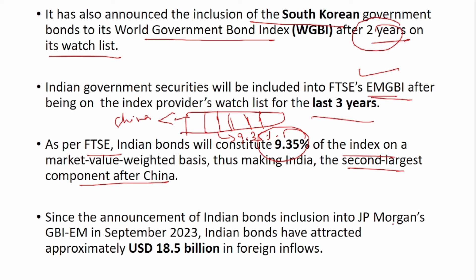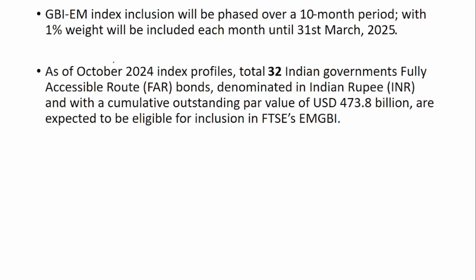Since the announcement of Indian bonds' inclusion in the JP Morgan index in September 2023, Indian bonds have attracted approximately $18.5 billion in foreign flows. By enlisting bonds in the global index, a lot of foreign flows happen. For the GBI-EM index inclusion, it will be phased over a 10-month period with one percent weight added each month until March 31, 2025. As of October 2024, approximately 473 billion in outstanding bonds across 32 fully accessible route bonds denominated in Indian rupees are expected to be eligible for inclusion in the FTSE index.